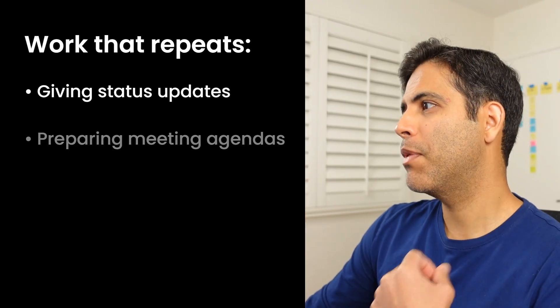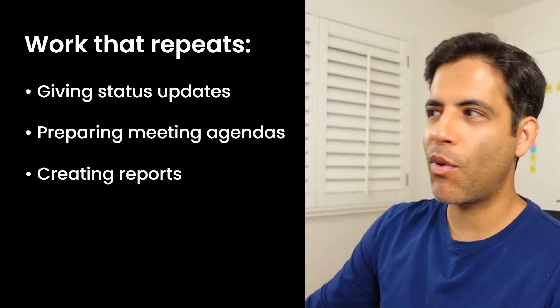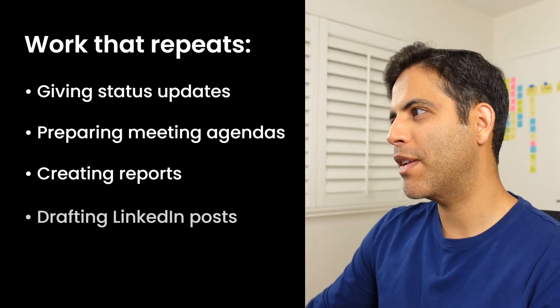Level 5. Most work tasks repeat — giving status updates, preparing meeting agendas, creating reports, drafting LinkedIn posts — and most of the time these follow a similar format. If you rely on one-off prompts every time you need to do one of these tasks, you're wasting time. In Level 5, we'll ask AI to create a template, structure, or system that we can reuse over and over to save hours in the future.